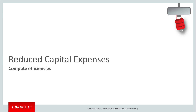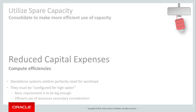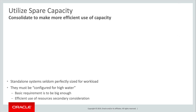Capital expense savings begin with technical efficiencies in the category of compute. There are three major factors here. The first is that consolidating with multi-tenant allows spare capacity to be utilized.